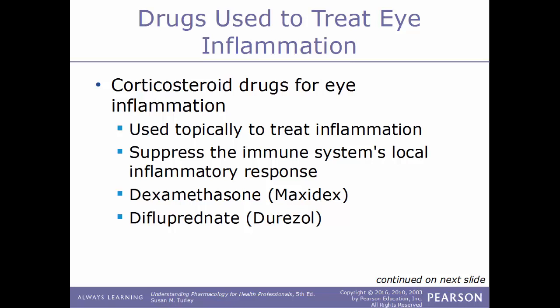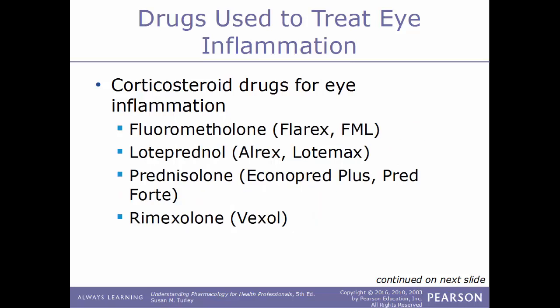Two examples of corticosteroid drugs: dexamethasone, sold as Maxidex, and difluprednate, sold as Durezol. Other examples include fluorometholone, sold as FML or Flarex; loteprednol, sold as Lotemax or Alrex; prednisolone, sold as Econopred Plus or Pred Forte; and rimexolone, sold under the name Vexol.